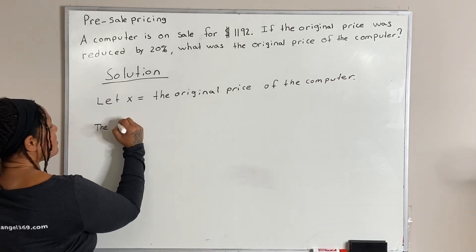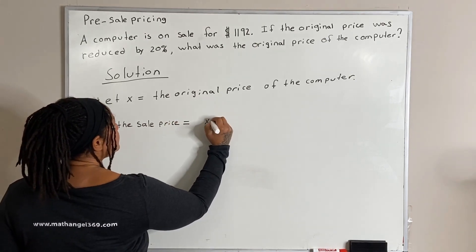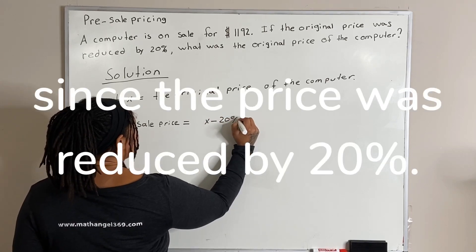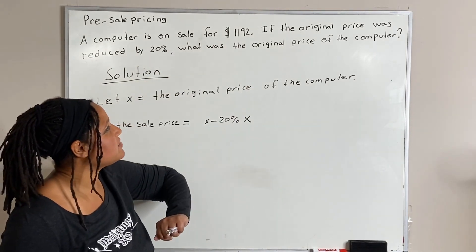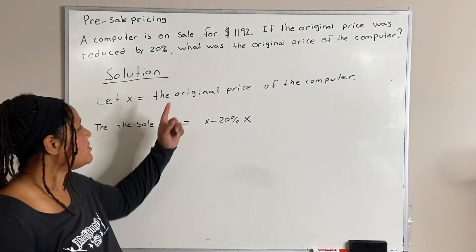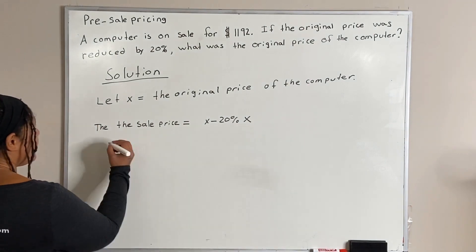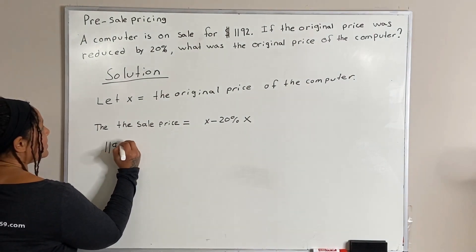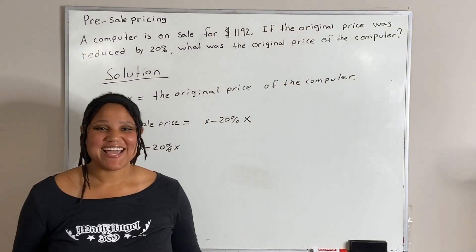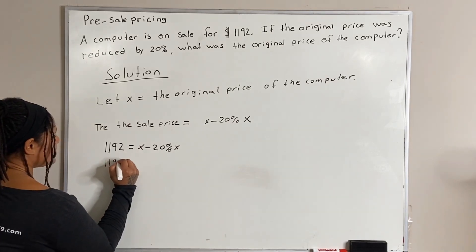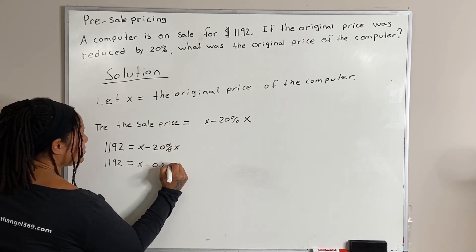Then, the sale price is equal to x minus 20% of x. And since we are given that our sale price is $1,192, we can simply set $1,192 equal to x minus 20% of x. And then we solve for x. So, I'm going to convert 20% into a decimal, which is 0.20x.